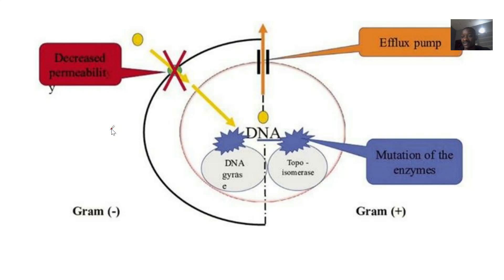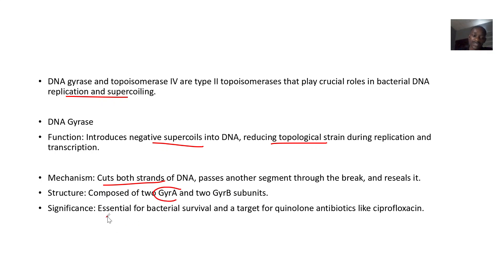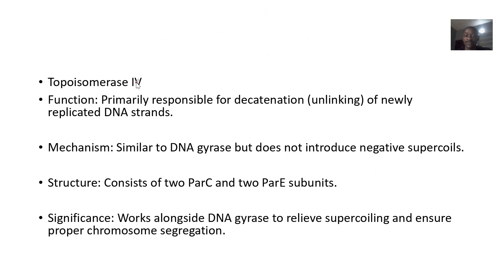We study these enzymes because they are so important that drugs have been developed to attack them — that's fluoroquinolones. DNA gyrase introduces negative supercoils into the DNA, reducing topological strain during replication or transcription. Its mechanism involves cutting both strands of DNA, passing another segment through the break, and resealing it. Its structure is composed of GyrA and two GyrB subunits, making it essential for bacterial survival and a target for antibiotics like ciprofloxacin.